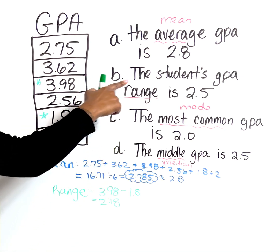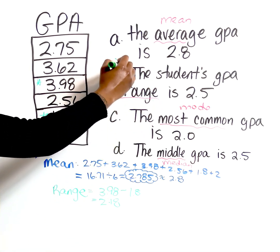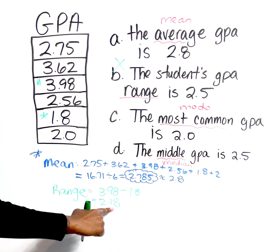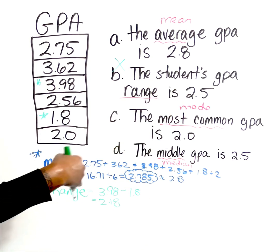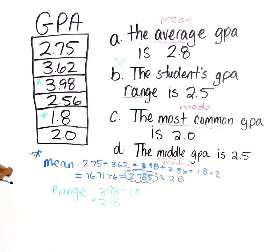that leaves me with a range of 2.18. This says the student's GPA range is 2.5. So that lets me know that's not correct. They're not even close enough for me to even think of rounding.